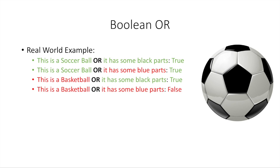Again, with my soccer ball example, same thing, except this time it's OR in the middle instead of AND. So this is a soccer ball OR it has some black parts — that's true. This is a soccer ball OR it has some blue parts — well, it's a soccer ball, so that's true. This is a basketball OR it has some black parts — well, it has some black parts, so that's true. This is a basketball OR it has some blue parts — no, neither of these are true, so that's false.